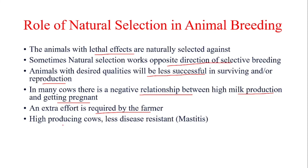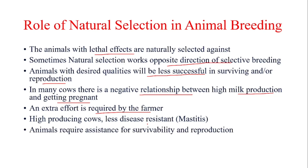It has also been seen that high-producing cows sometimes suffer from health issues — they are less disease resistant and mostly suffer from mastitis compared to animals which are lower producing. This is another way that natural selection affects domestic animals.